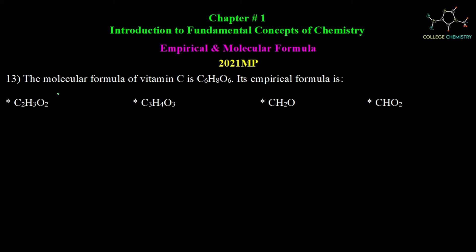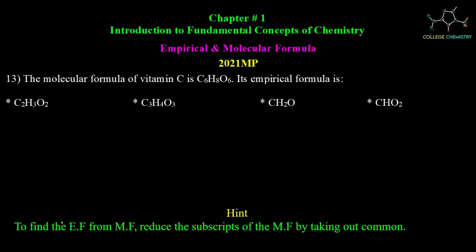Question number 13: The molecular formula of vitamin C is C6H8O6. We need to find its empirical formula. To find the empirical formula from a molecular formula, reduce the subscripts by taking out the common factor. In these three subscripts, the common number is 2.